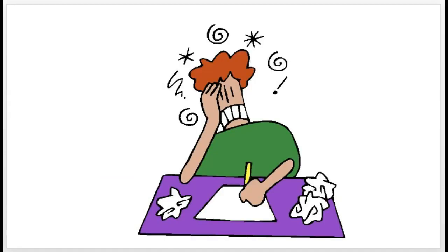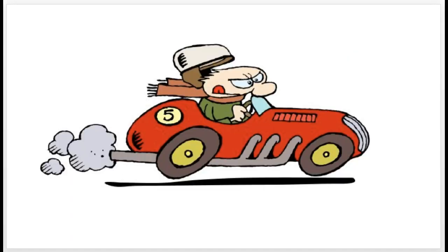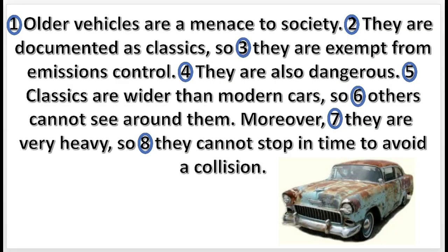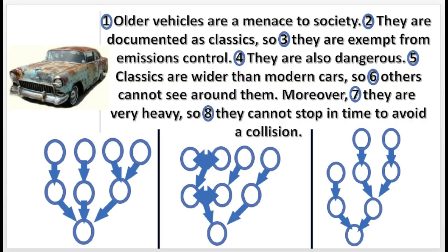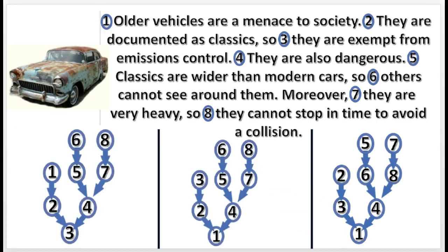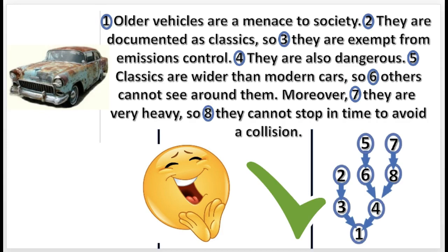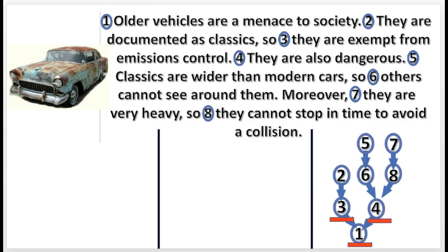You may want to get some scratch paper, because it's about to get more difficult — as we turn it up a notch! Here's another practice problem. Select the correct diagram, then select the correct sequence. The conclusion is supported independently by 3 and 4. 2 supports 3. Also, 6 and 8 support 4 independently. 5 supports 6, and 7 supports 8.